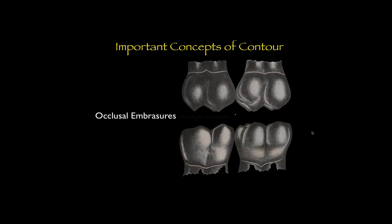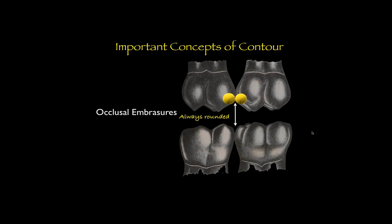Another area I quite often see improperly formed is the occlusal embrasure area. These areas where the teeth touch are always rounded. Posterior teeth form embryologically from lobes — from tooth buds that are basically rounded things that fuse together. So everything in teeth is rounded. I tell people: think of it like a ball — a tennis ball kind of buried inside the tooth with just part of the outer surface exposed. You have this roundedness in all three directions. It's a subtle rounding of teeth where they come together and where lobes exist that is really important for natural-looking morphology.